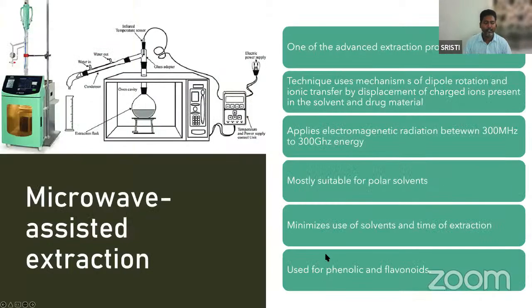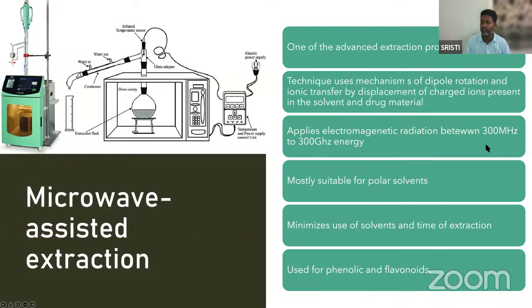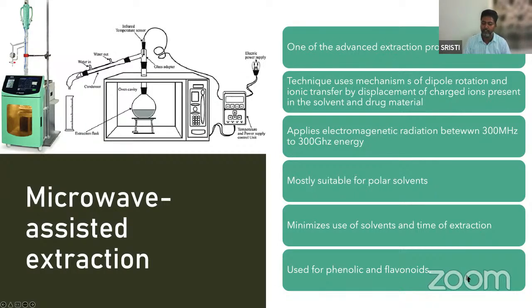The next is microwave-assisted extraction, one of the advanced extraction procedures. It uses the mechanism of dipole rotation and ionic transfer by displacement of charged ions present in the solvent. Electromagnetic radiation between 300 MHz to 3000 GHz of energy is applied for extraction. It is most suitable for polar solvents, minimizes solvent use and extraction time, and is generally used for phenolic and flavonoid compounds.